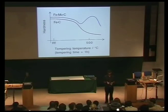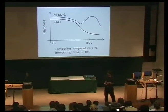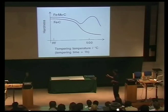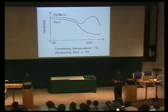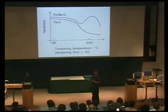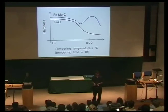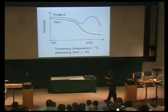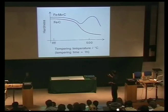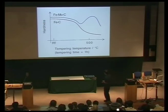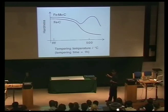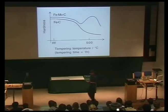If you temper at a higher temperature, then you start to get recovery and recrystallization. So if you follow the hardness of martensite in an iron-carbon alloy as you temper, at first there are very gentle changes because diffusion is slow and precipitation, recovery, and recrystallization processes take a lot of time. Once you get towards the temperatures where substitutional atom diffusion becomes significant, you get a rapid drop in hardness.